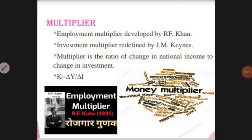What he says is that a change in investment leads to a change in national income, and that change in national income leads to a further change in investment. The ratio of primary employment leads to change in employment. Primary employment means if the government starts constructing roads, railways, drainage, dams, and bridges, it will automatically give job opportunities to common people.